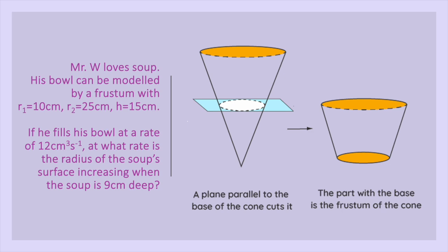Mr. W loves soup. His bowl can be modelled by a frustum with radii 10 centimeters and 25 centimeters. That's the base and the top radii. And then a height of 15 centimeters.